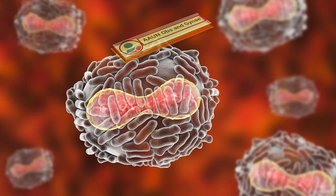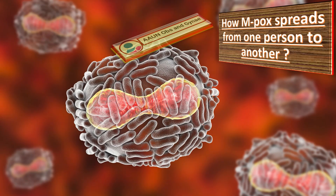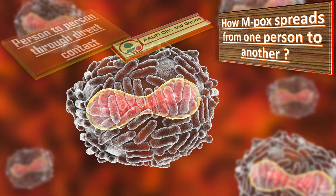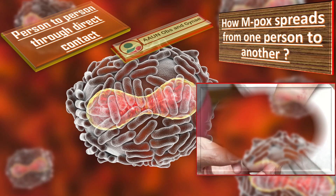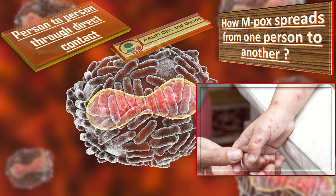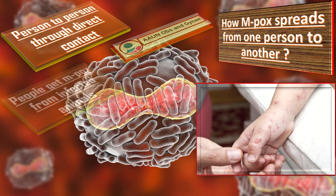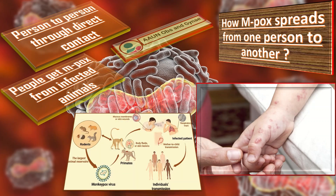How does MPOX spread from one person to another? MPOX spreads through direct contact with the infectious rash, scabs, or body fluids; through respiratory secretions during prolonged face-to-face contact or during intimate physical contact; and through touching items such as clothing or linens that previously touched the infectious rash or body fluids. It is also possible for people to get MPOX from infected animals either by being scratched or bitten, or by preparing or eating meat or using products from an infected animal, according to the CDC.